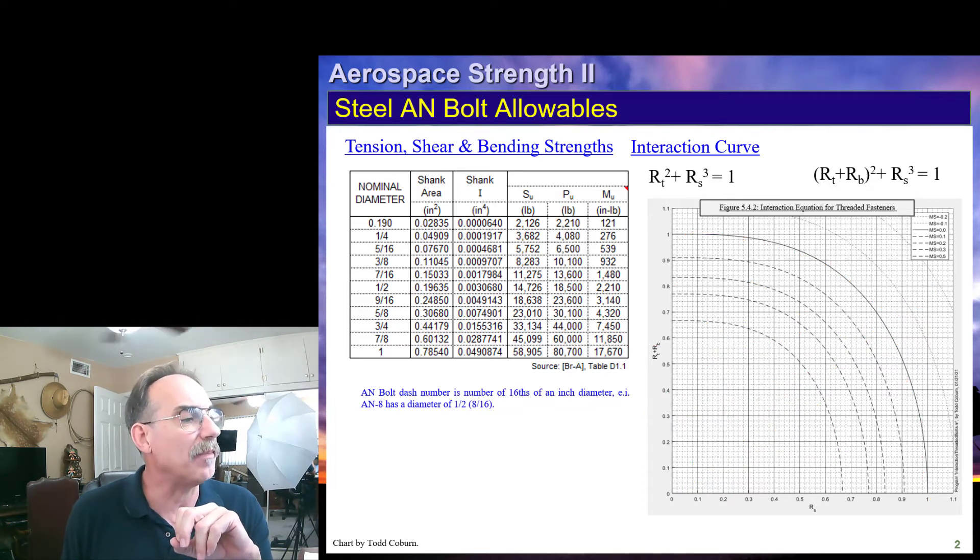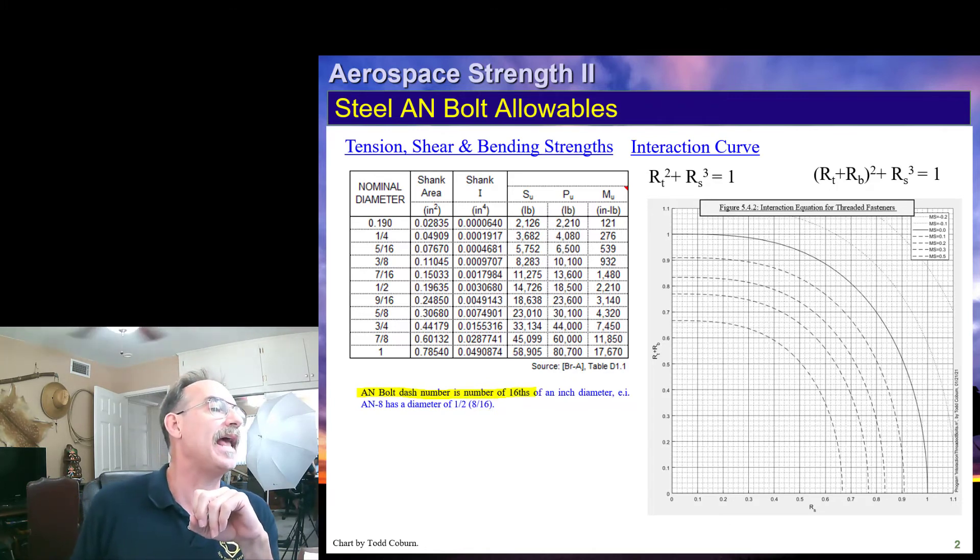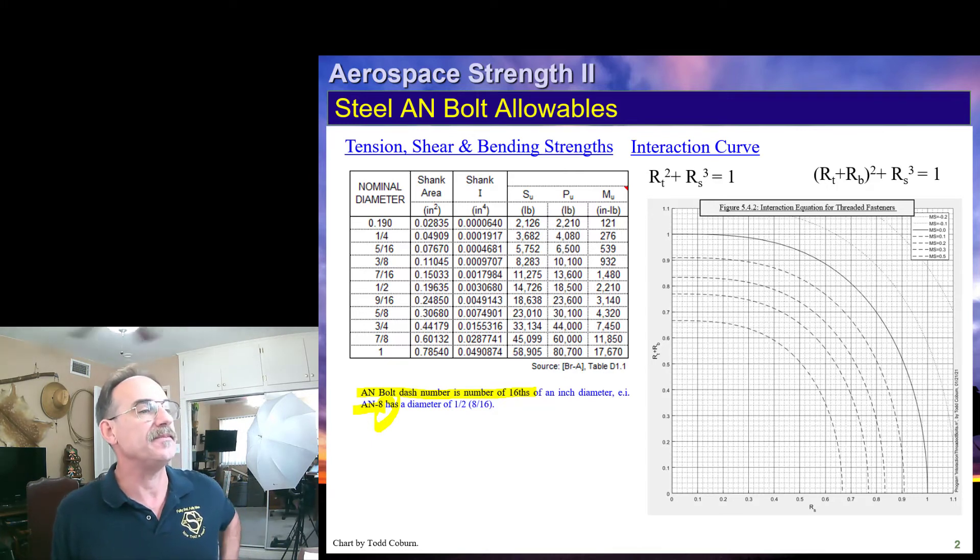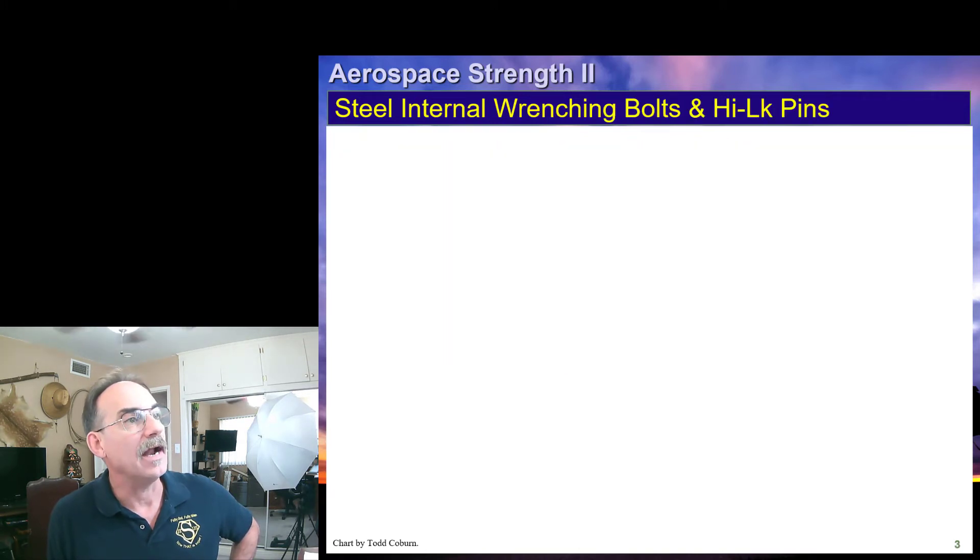And this little note down at the bottom here just points out that AN bolts are called out by dash number. So an AN8, where that dash number 8 is the number of 16ths, means it's an 8 16ths or a 1 1⁄2 inch bolt.